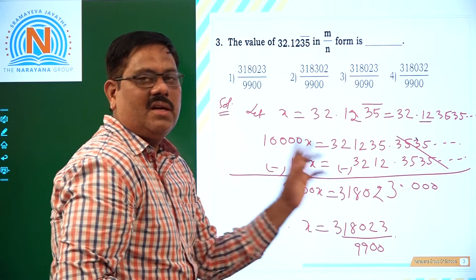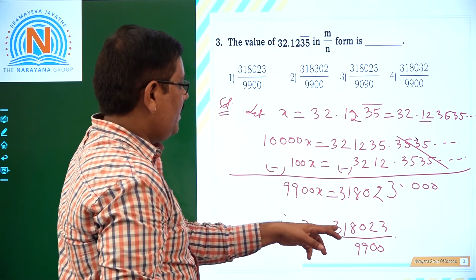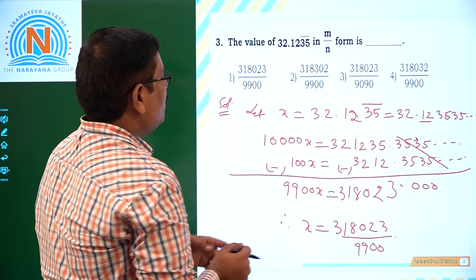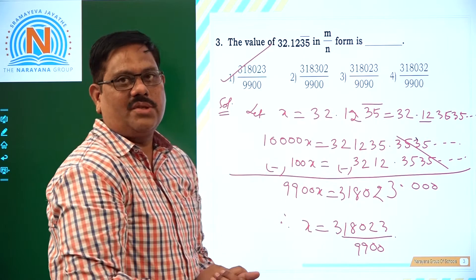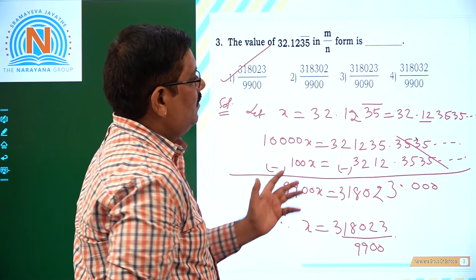This is the m by n form for the given decimal. 31023 by 9900 is nothing but first option.